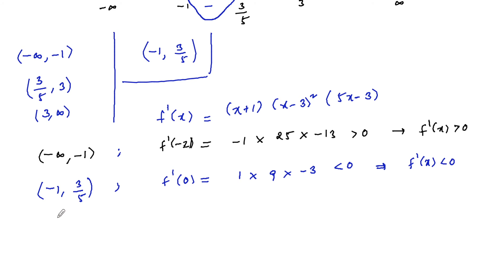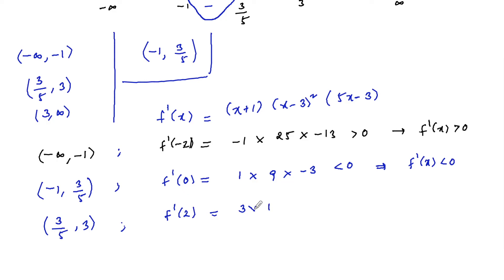In the interval (3/5, 3), take x = 2: f'(2) = (3) · (1) · (7) = 21, which is positive. So f'(x) > 0 in this region, confirming the function is increasing on (3/5, 3).